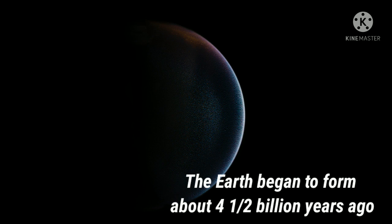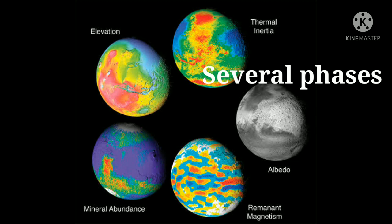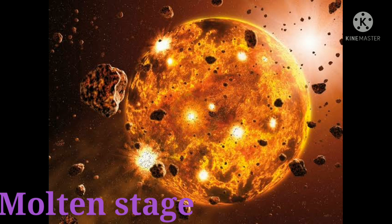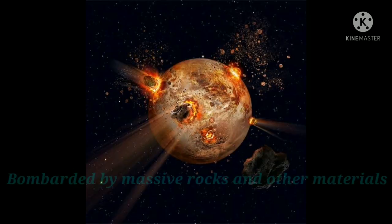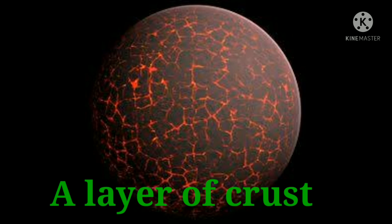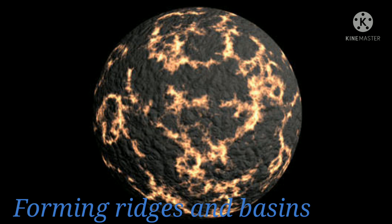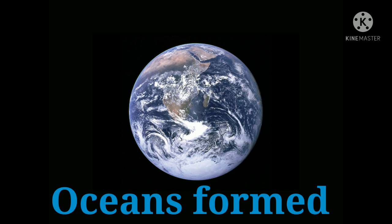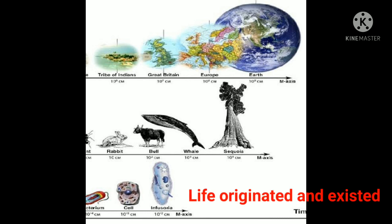The Earth began to form about 4 and a half billion years ago and has reached its present form through several phases. It began as a ball of swirling dust and clouds and passed through a molten stage. At that time the Earth was very hot and was constantly bombarded by massive rocks and other materials from space, causing it to grow in size. Lighter particles cooled at the top and formed a crust. As the Earth's interior continued to cool, it contracted and the outer crust wrinkled, forming ridges that gradually became mountains and basins, which became oceans. After half of the long span of Earth's history, life appeared in the oceans and slowly evolved into diverse plants, animals and human beings over millions of years.